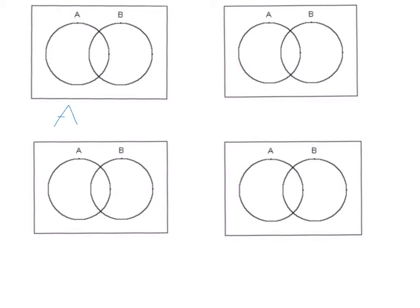Next we need to shade A intersection B. As you know, intersection means the common part, so we need to shade this little part in the middle — between A and B, common for both A and B.